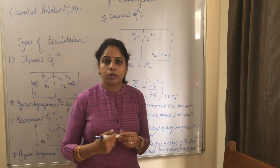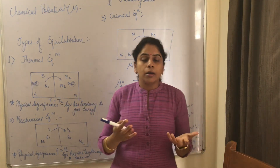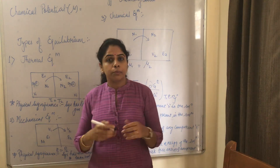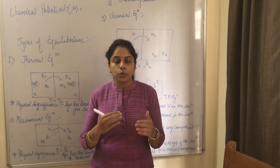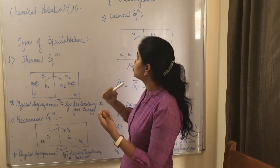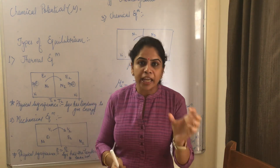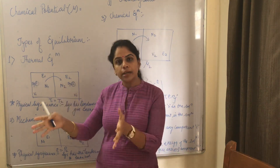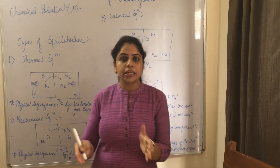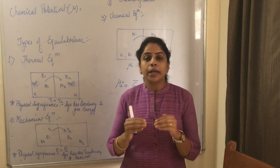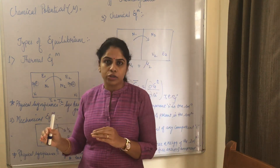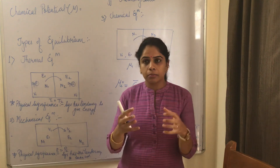Now let's discuss what information we get from chemical potential. Chemical potential tells us about the real behavior of real solutions or real gases. It helps us know about the behavior of any individual component I in a solution. Chemical potential, denoted by mu, measures how much free energy changes if you add or remove dNi particles of any component I while keeping the other particles constant.